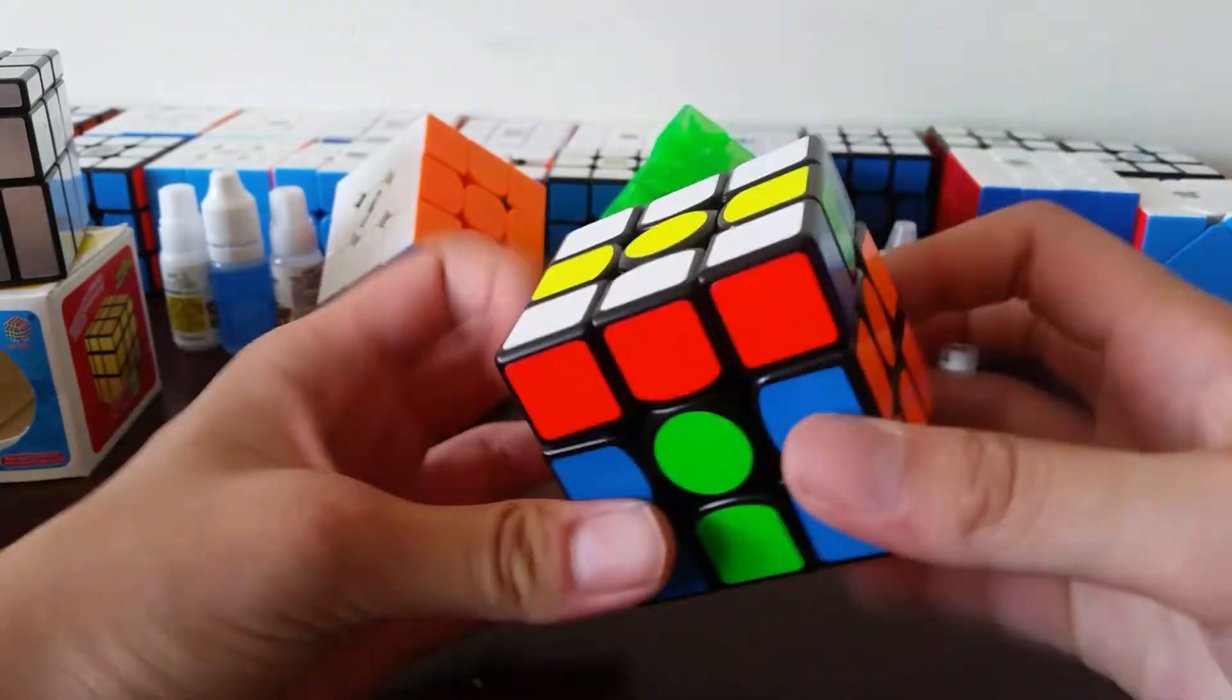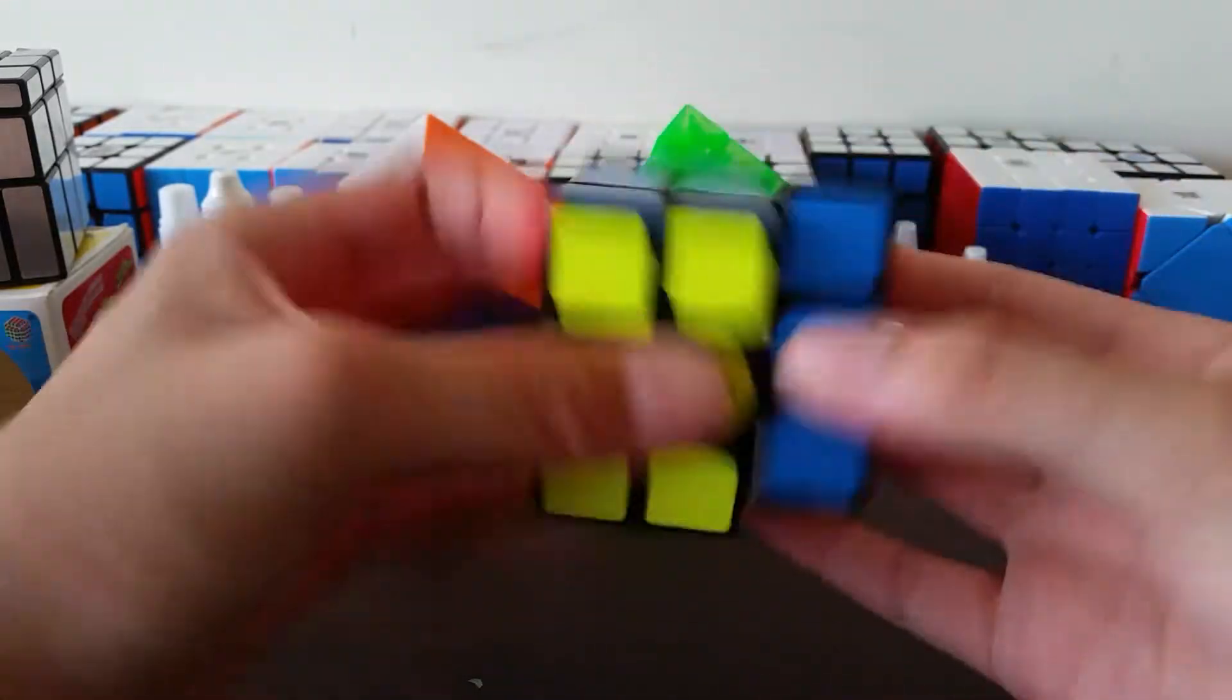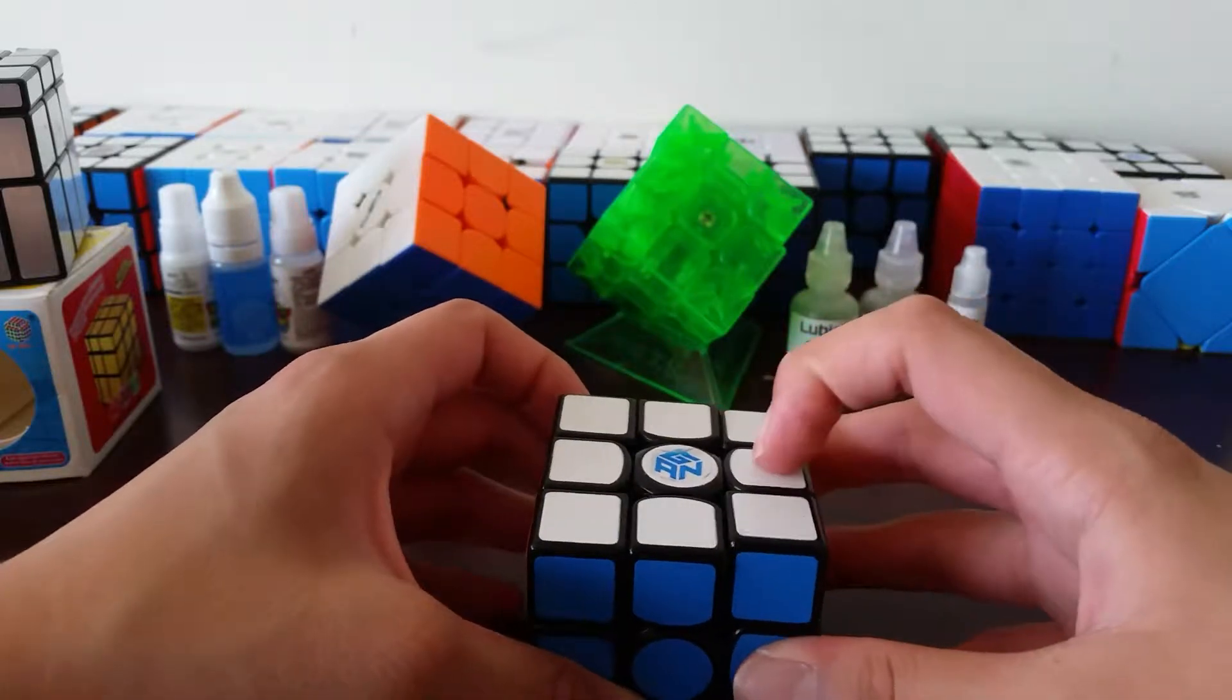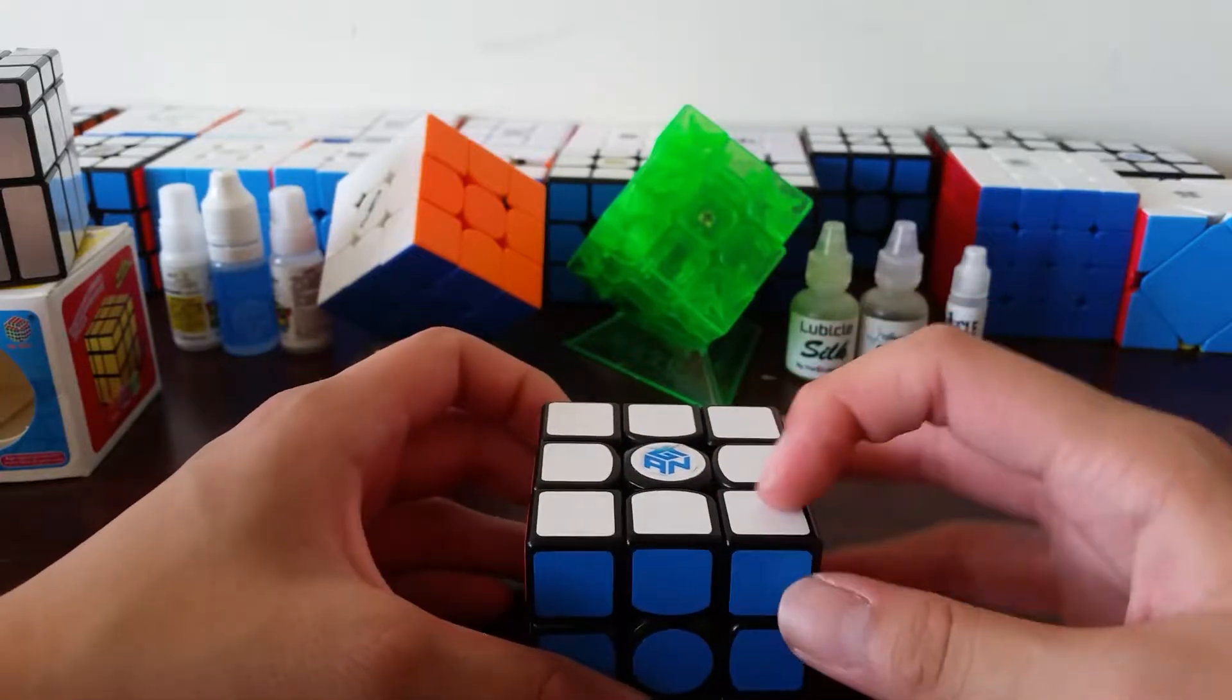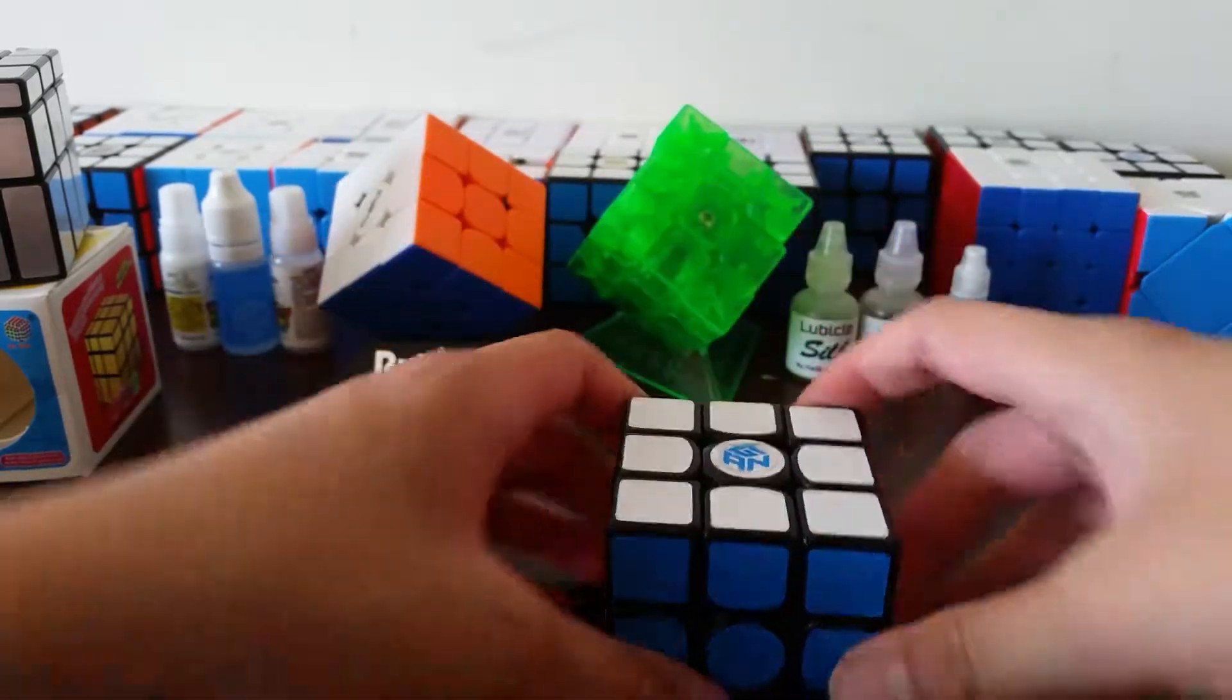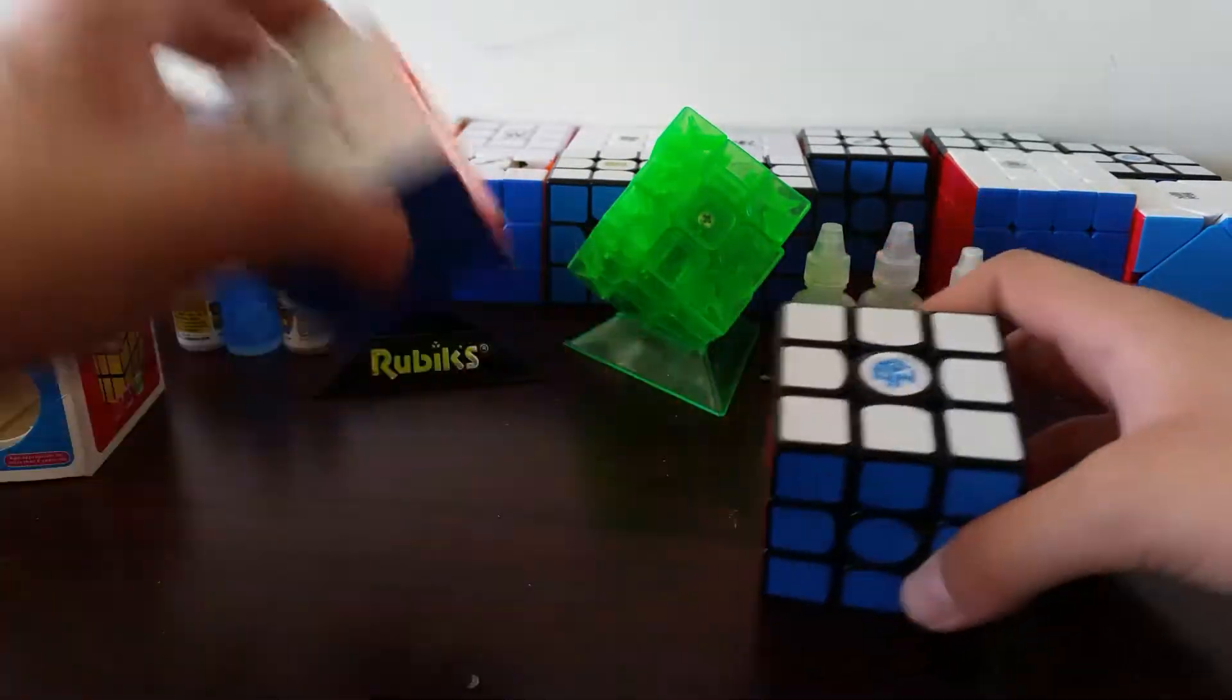So overall, this is a really nice cube. There are hardly any flaws. And if it weren't for how amazing the feeling of the Valk M was, I'd probably use this as my equal main. This and the Valk M are pretty much perfect together. They're both really good cubes, but I just like the Valk M better, probably just for the feeling.